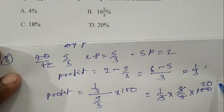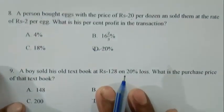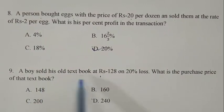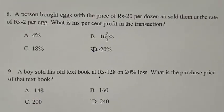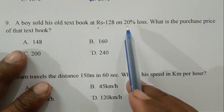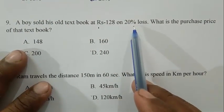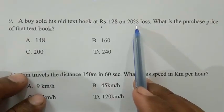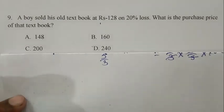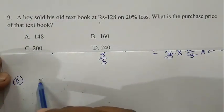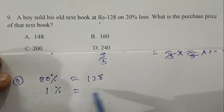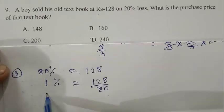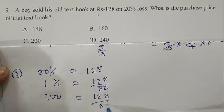Question number nine: a boy sold his old textbook at Rs 128 on 20% loss. What is the purchase price of the textbook? He can sell the book with the loss of 20%, so he can sell the book at 80% of the cost price. That is 80% equal to 128. 1% equal to 128 by 80, and 100% equal to 128 by 80 into 100, so 160. So cost price of the textbook is 160. B is the right answer.